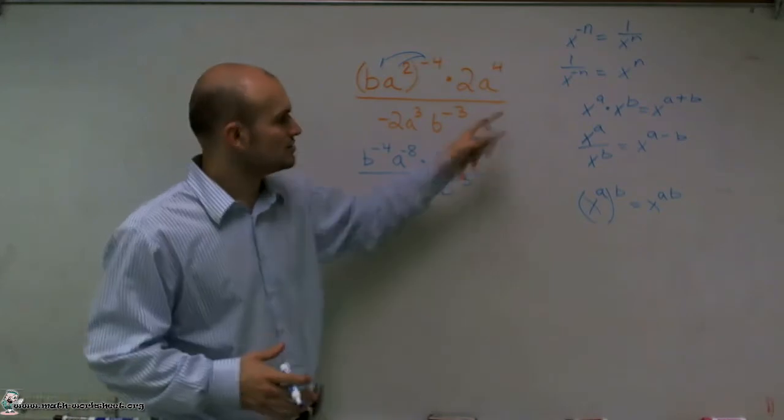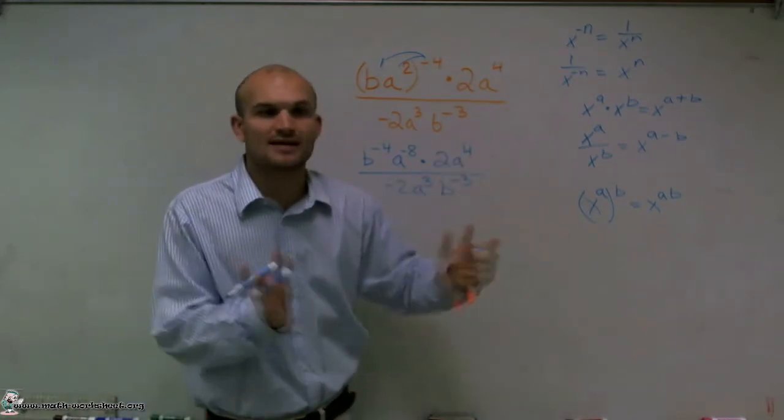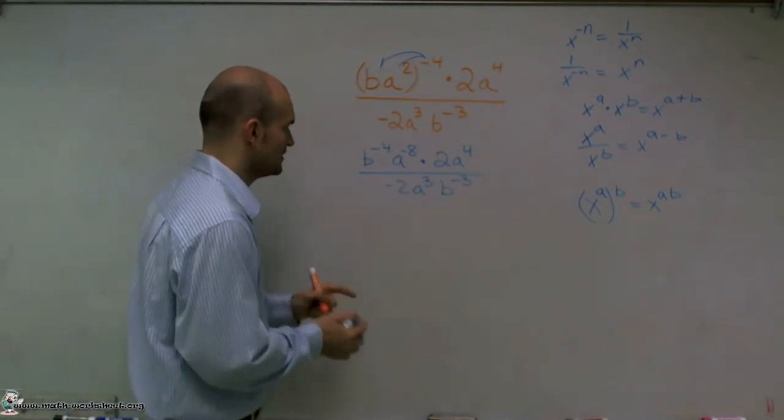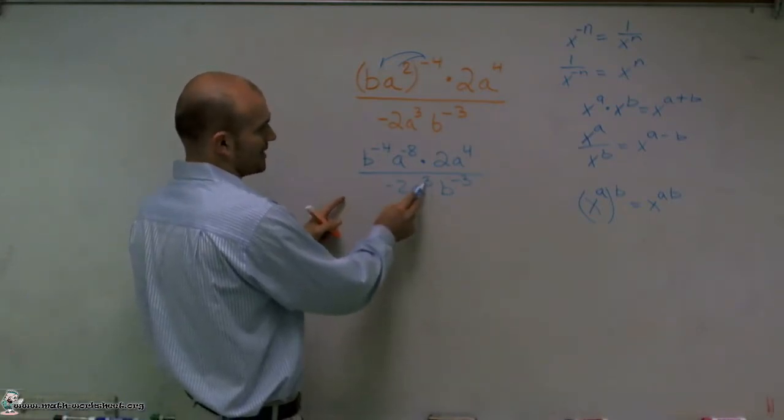So I'm going to use my negative exponent properties to put them all on the same line. And then I'll use my multiplication rule to add and subtract. And then whatever my answer is, then I'll put the exponents back where they're supposed to be.